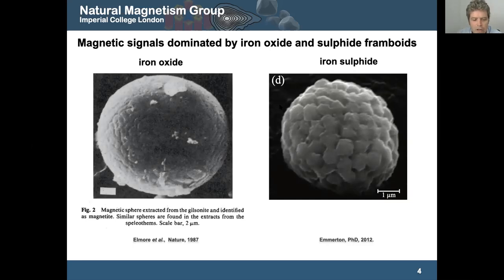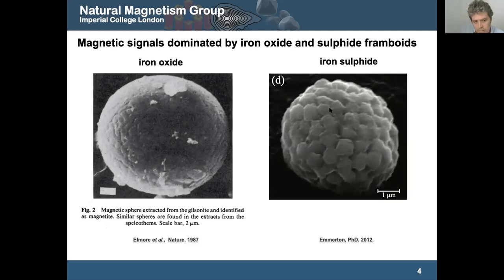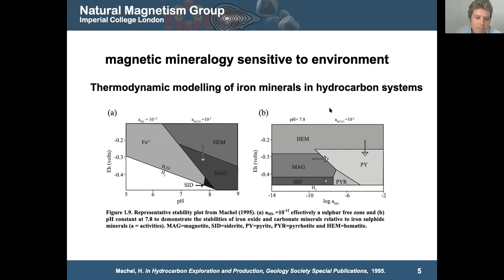Here we've got a study from 2000 from the group in Venezuela with three cores. The two on the left are above hydrocarbon reservoirs and the one on the right is not, and you can see spikes in the susceptibility — the values are much higher. So there's clearly some kind of link between the presence of hydrocarbons and the magnetic signal of rocks. We also see wonderful framboids of iron oxides and iron sulfides, and thermodynamic modeling by Hans Mackel and Liz Burton in the early to mid 90s showed how different minerals form and change depending on conditions of depth and pressure.